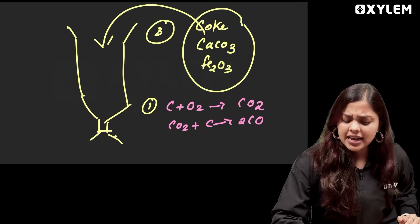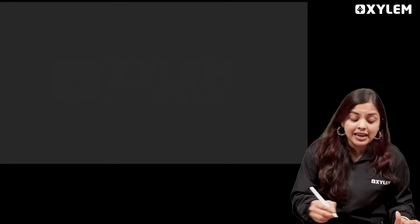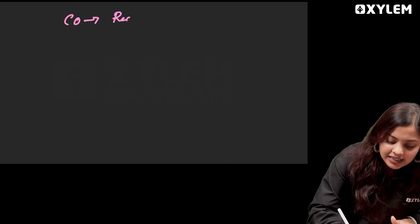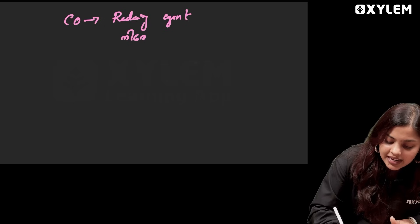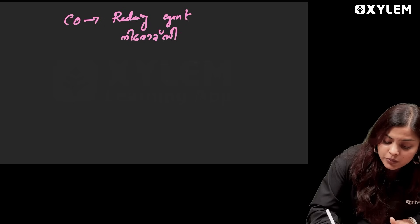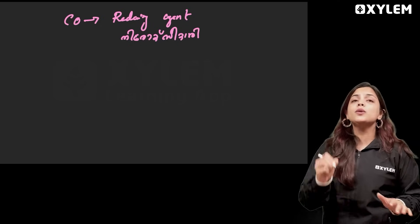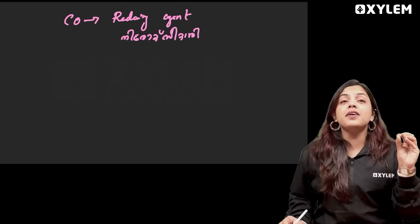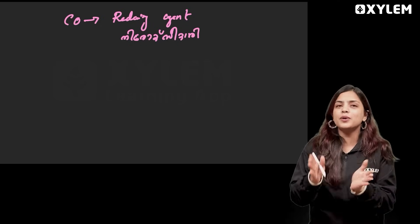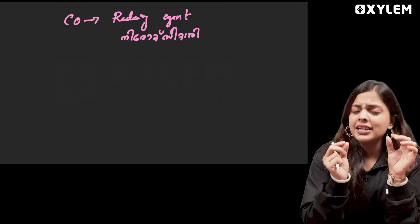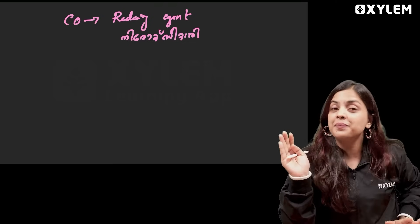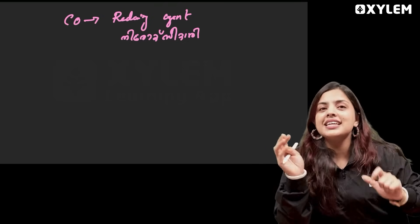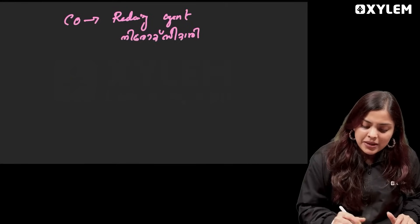That carbon dioxide then reacts with more carbon to produce carbon monoxide (CO). Carbon monoxide acts as a reducing agent — it is responsible for removing oxygen from the iron ore.